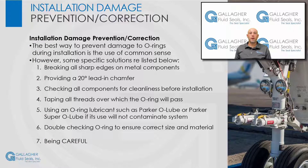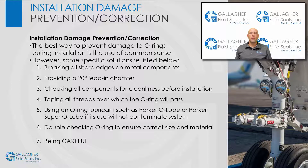How do you prevent or correct installation damage to an O-ring? Probably the best way is the use of good old-fashioned common sense. However, here are some specific solutions: breaking all sharp edges on metal components, providing a 20-degree lead-in chamfer, checking all components for cleanliness before installation, taping all threads over which the O-ring will pass, using an O-ring lubricant such as Parker O-Lube or Parker Super O-Lube if its use will not contaminate the system, double-checking the O-ring to ensure the correct size and material, and finally, being careful.